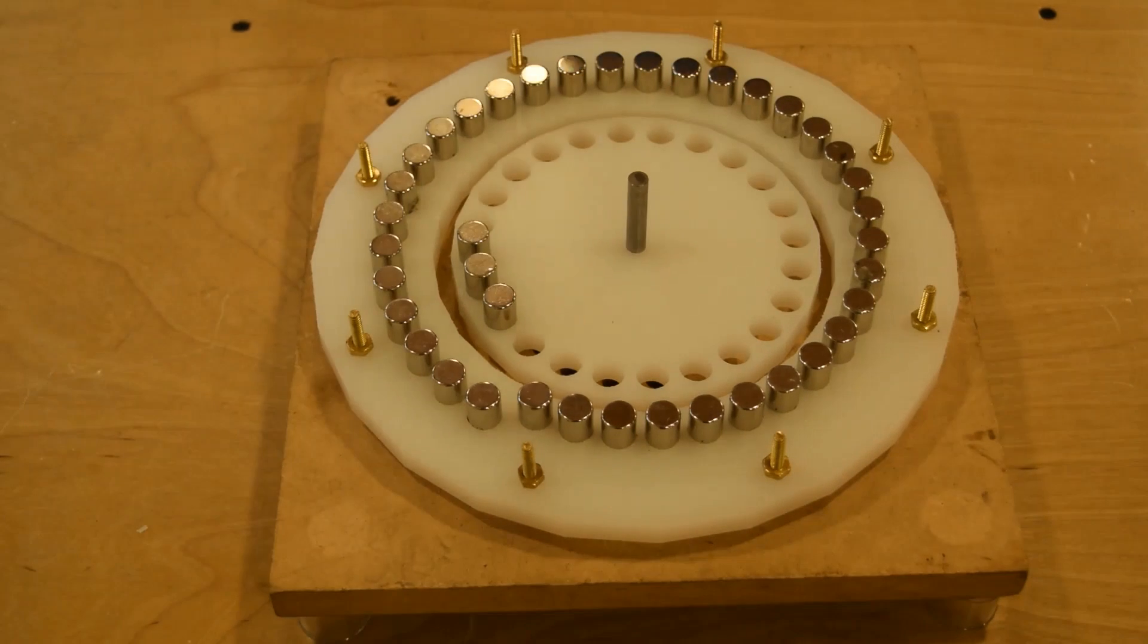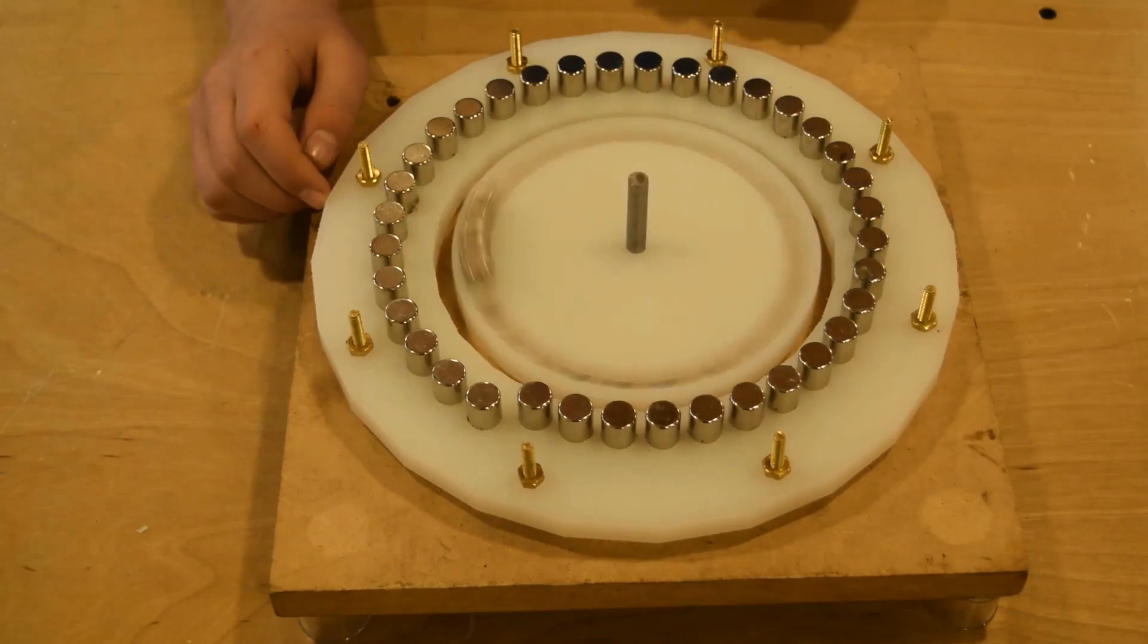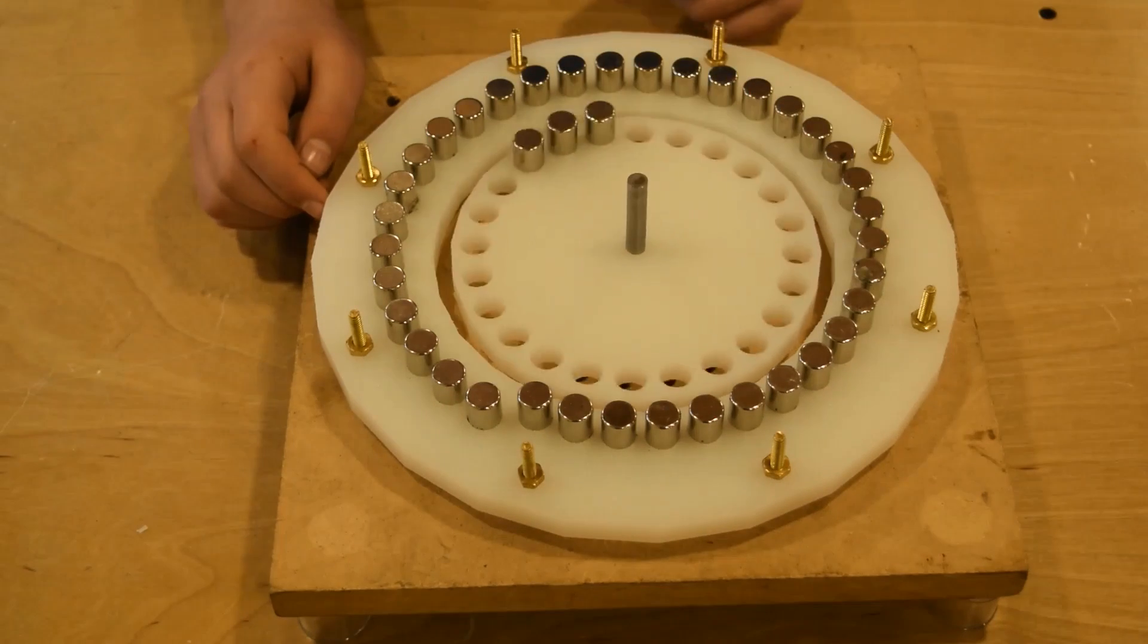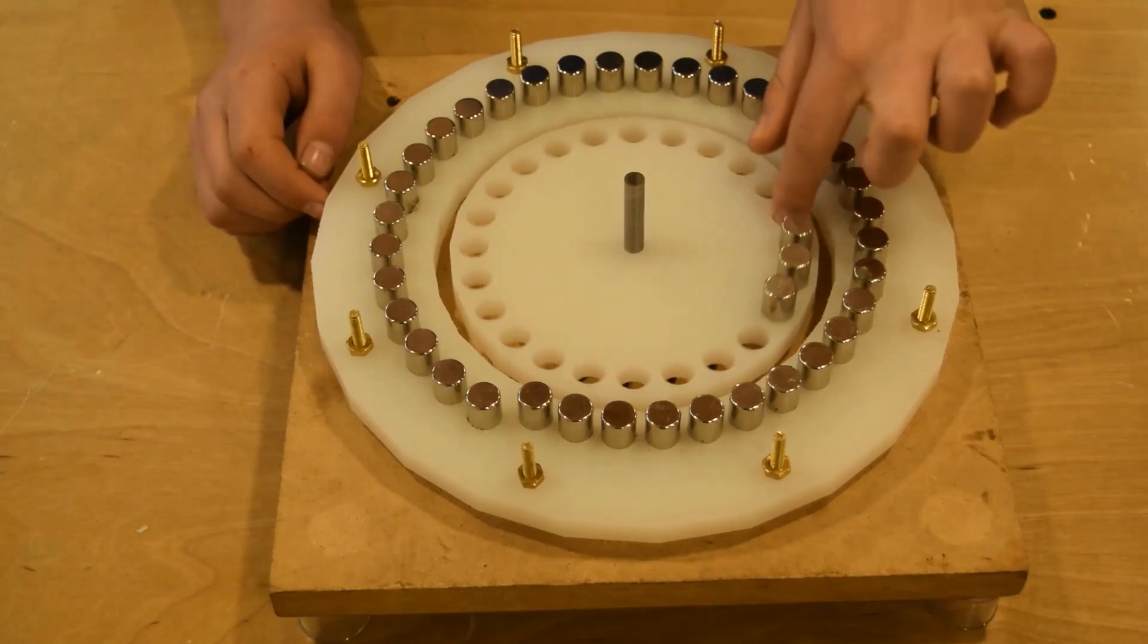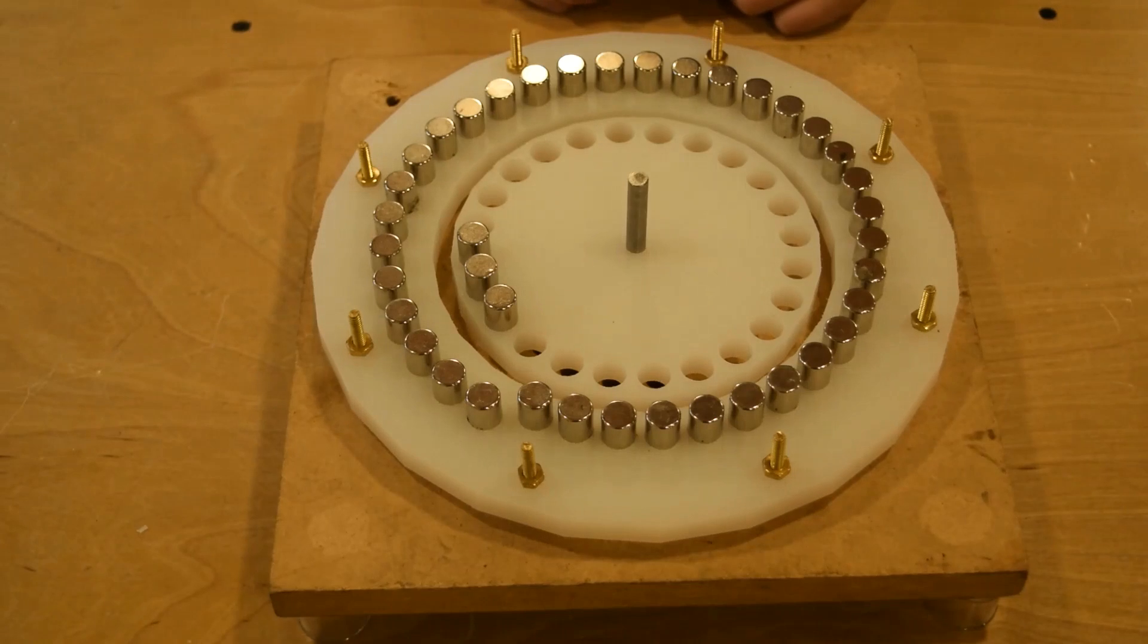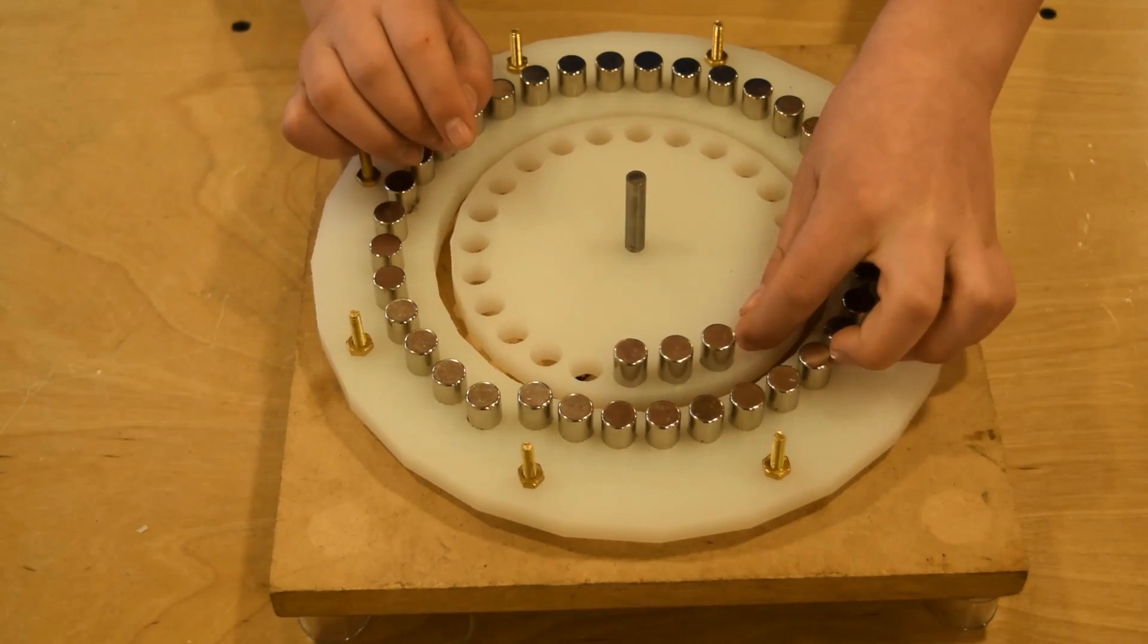This shows that the rotor experiences positive interaction, three hundred degrees of the rotation. Right now, both sets of magnets in the rotor and the stator are in opposing mode. They repel each other, starting at the small spacing, moving toward the larger spacing.